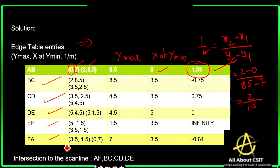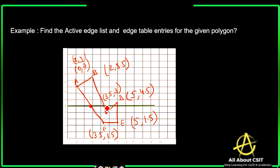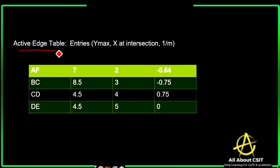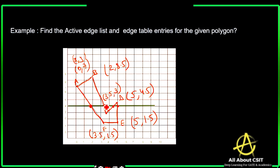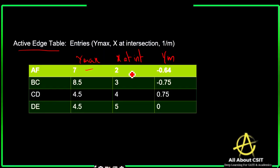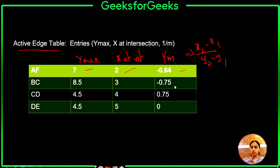The intersections with the scan line are edges AF, BC, CD, and DE. For the active edge table entries, the columns are y-max, x at intersection, and 1/m value. For edge AF: y-max is 7, x at intersection is noted, and the 1/m value is calculated as (x2 minus x1) divided by (y2 minus y1). This is how we store the active edge table entries. I hope you understand what exactly the scan line fill algorithm is — if you have any trouble understanding, please let me know.